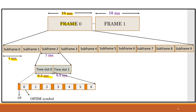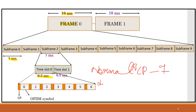One time slot will consist of 12 subcarriers or 7 OFDM symbols. Now, 7 OFDM symbols in 1 time slot is true only for the case of normal cyclic prefix. When extended cyclic prefix is used, there will be a total of 6 OFDM symbols.